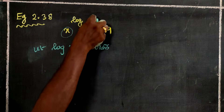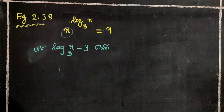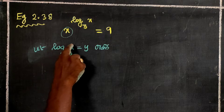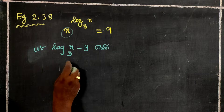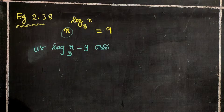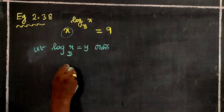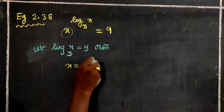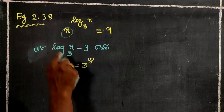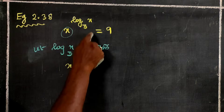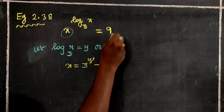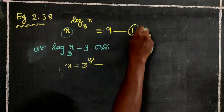Now, if log of x base 3 is equal to y, we will eliminate the log. What do we do? x is equal to 3 power y. This is the same equation.